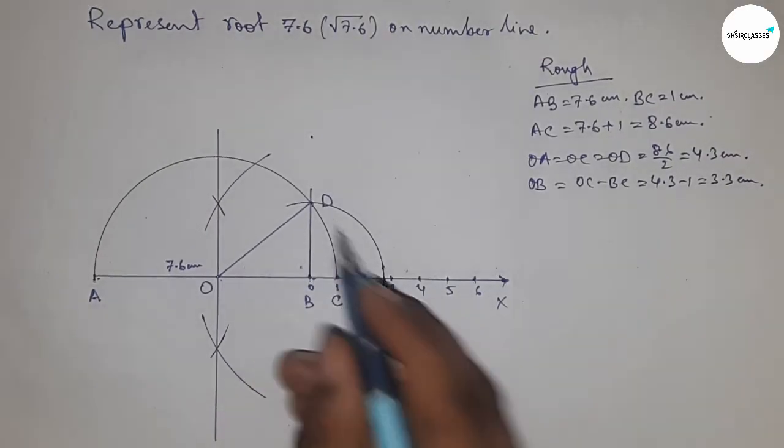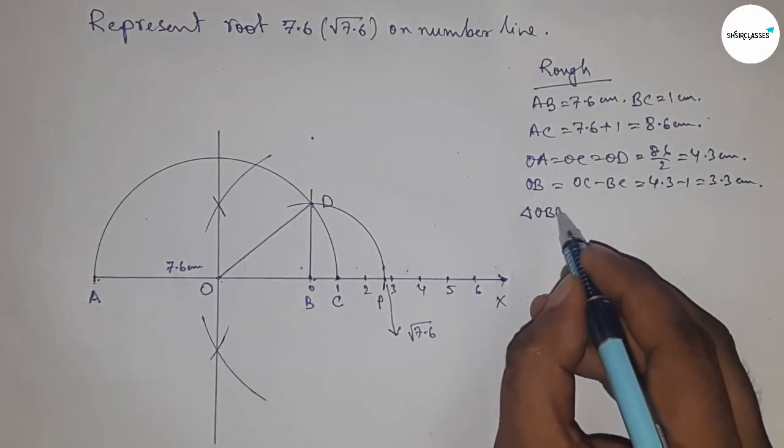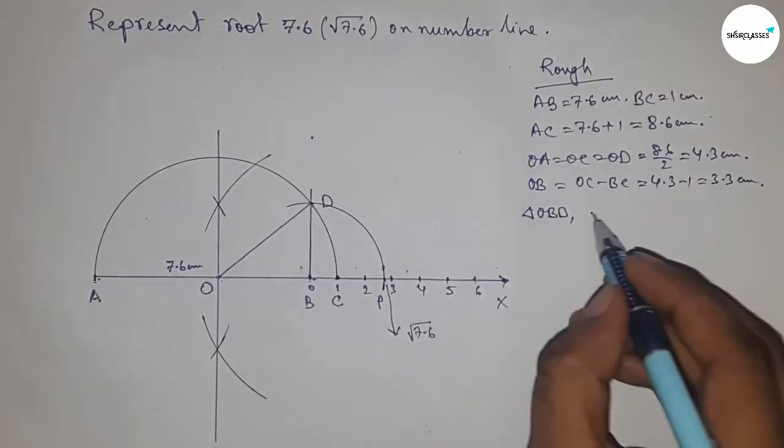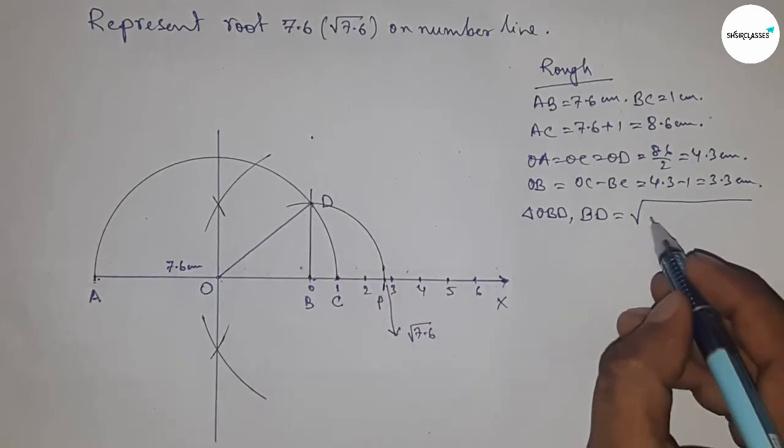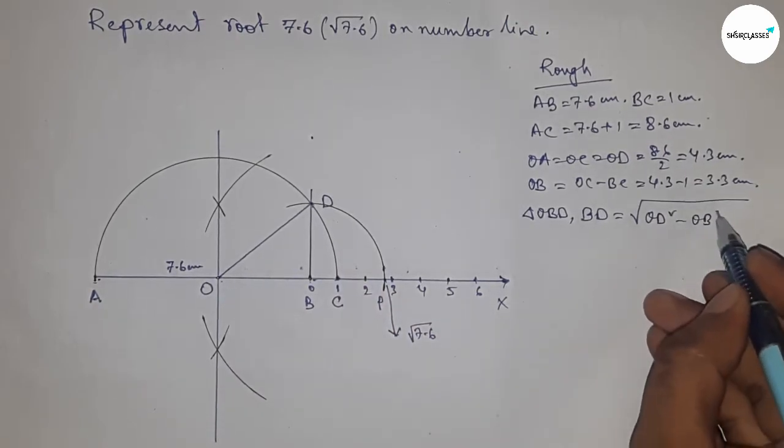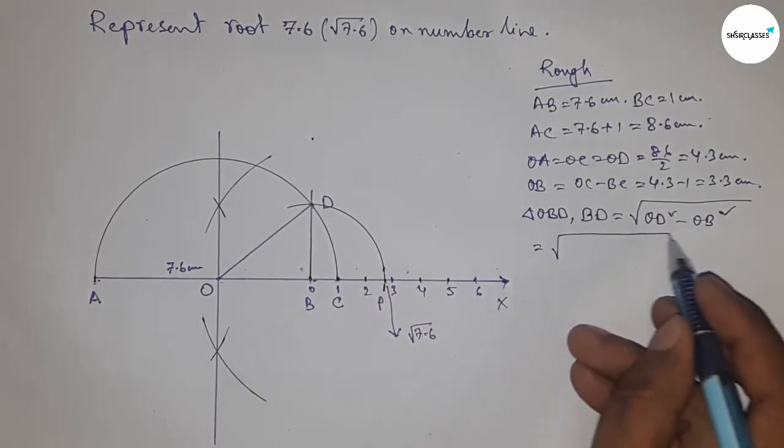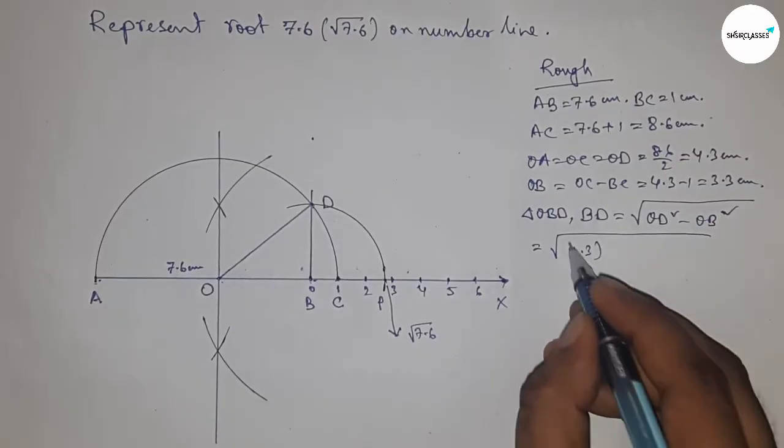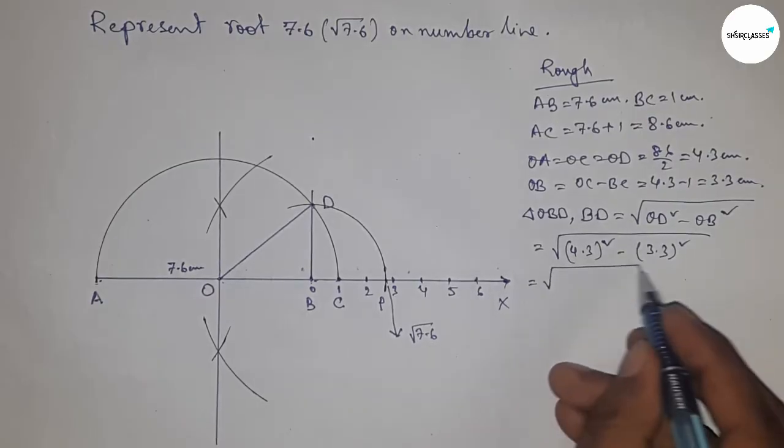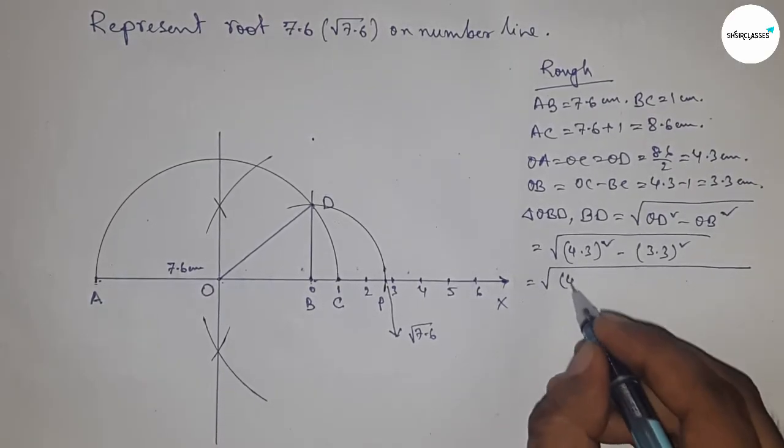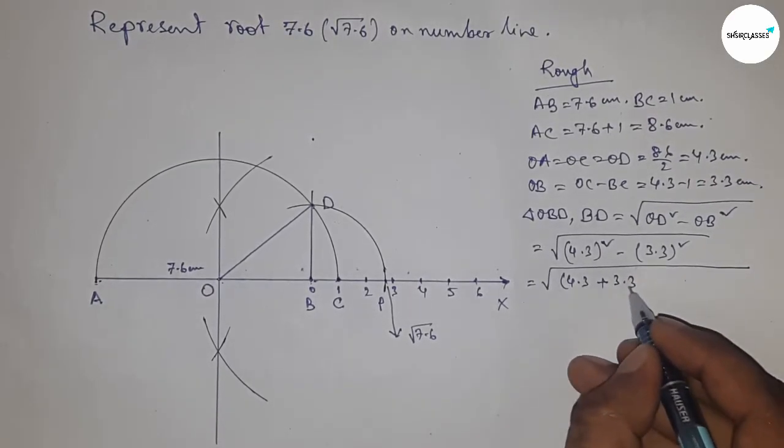From right angle triangle OBD, we can write BD equals root over, by Pythagoras theorem, OD square minus OB square. Putting the values and using the formula a square minus b square equals a plus b times a minus b.